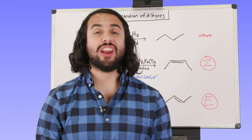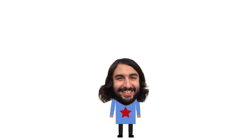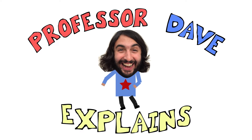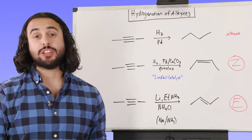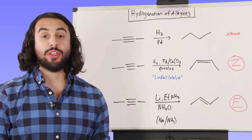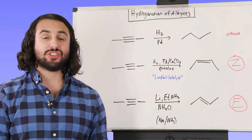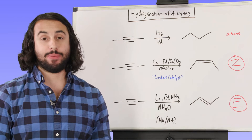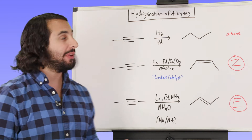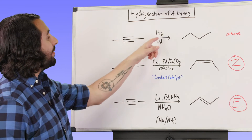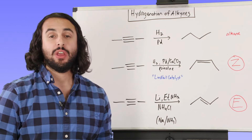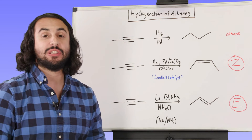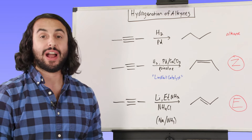Professor Dave here. Let's talk about hydrogenation of alkynes. When we first talked about addition reactions, one of the first things we talked about was hydrogenation, and we learned about different ways that hydrogen atoms can add to a pi bond. The first way we looked at was simple hydrogen over palladium — two hydrogen atoms add syn to the alkene. That's an example of hydrogenation.